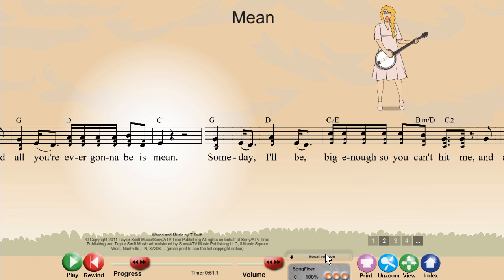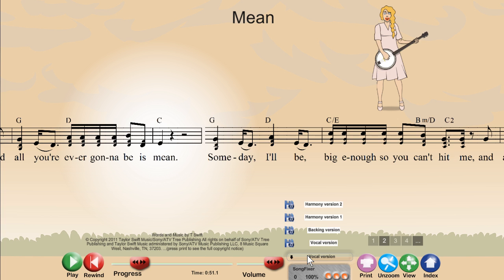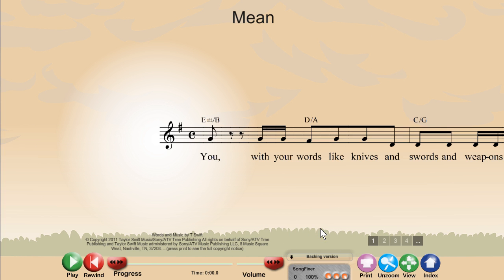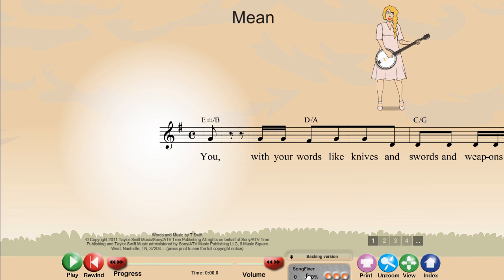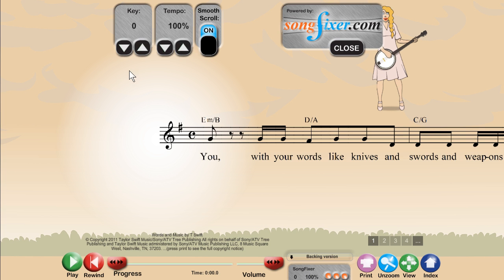Let's change the version. Press this button down here that says Vocal Version, and up they come. Let's try the backing version. While we're playing the backing version, it's the perfect opportunity to try out the key fixer and tempo fixer.